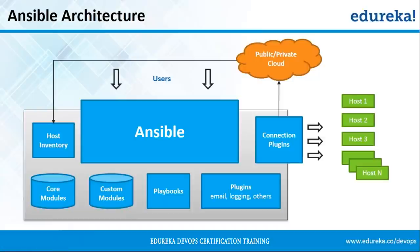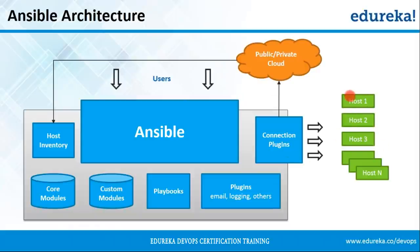Let's look at the Ansible architecture in more granular detail. We've got a public/private cloud acting as a repository for all IT installations, a bunch of host machines, and the Ansible automation engine. Users can directly run a playbook in this Ansible automation engine, and it gets deployed on the hosts. Inside the Ansible automation engine, we've got a host inventory — just a list of all the IP addresses of your hosts — written as a simple initialization file. It's very easy to write, and I'll show you how later in this tutorial.